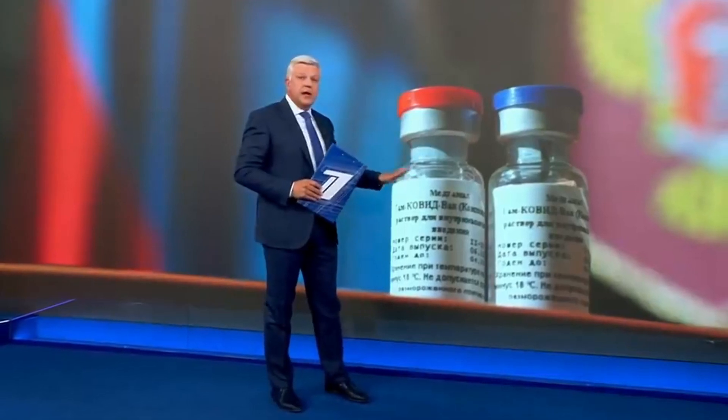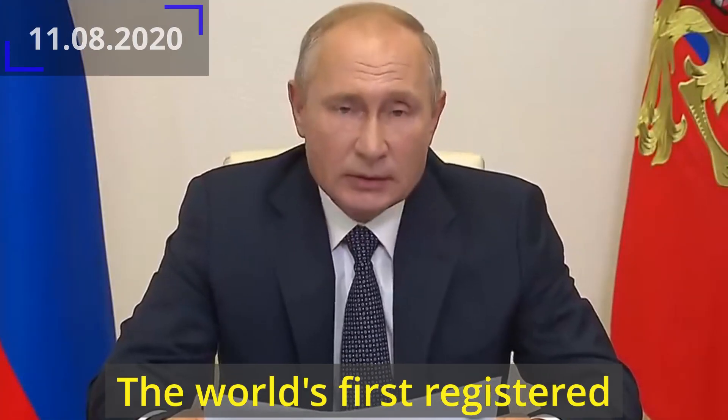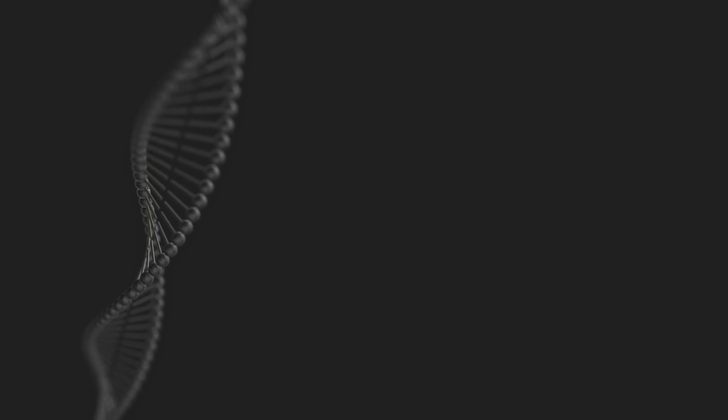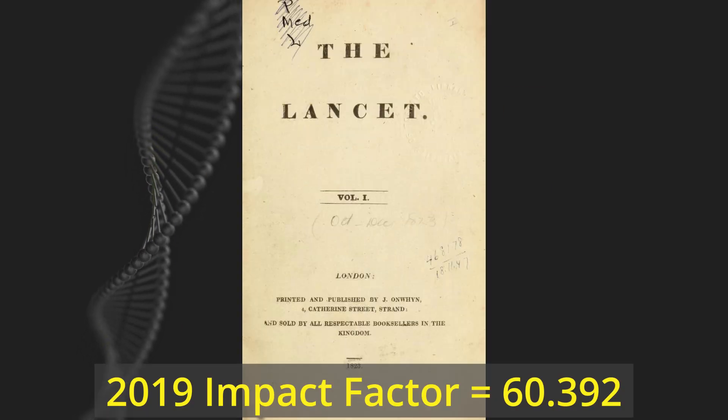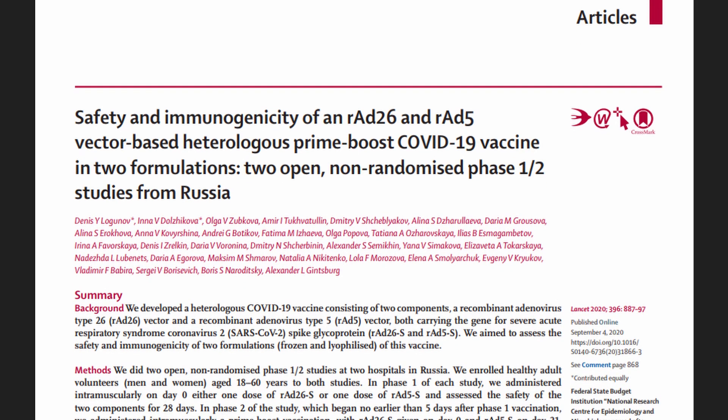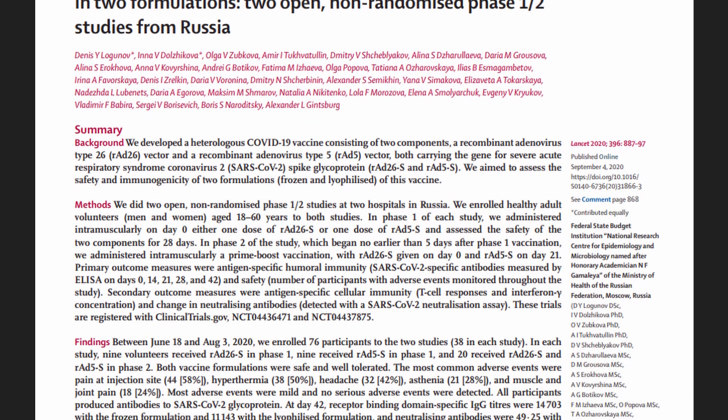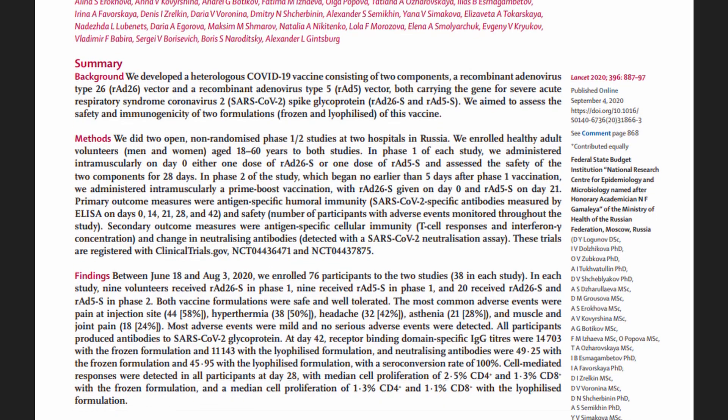The second reason is the rather questionable PR that the Russian media provided for the Russian vaccine. Firstly, the drug was presented as the world's first COVID vaccine on August 11th, before any evidence of its effectiveness was published in scientific journals. They were eventually published in a very authoritative journal, The Lancet, on September 4th. There were also questions about the quality of the publication itself and the data in it, but we'll leave that to the conscience of the journal's editors and reviewers.